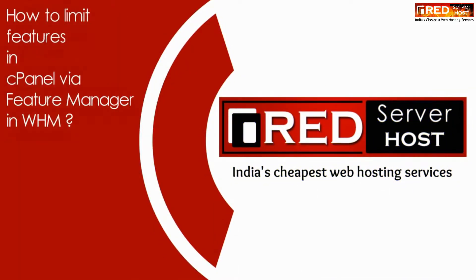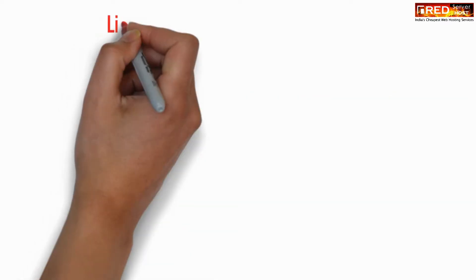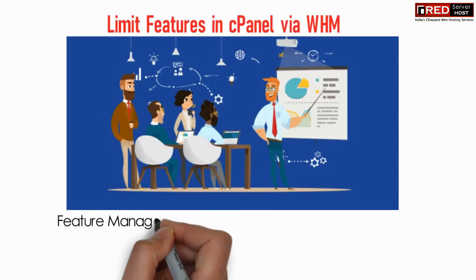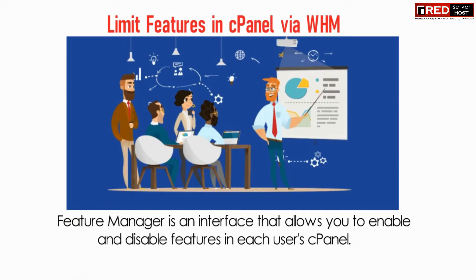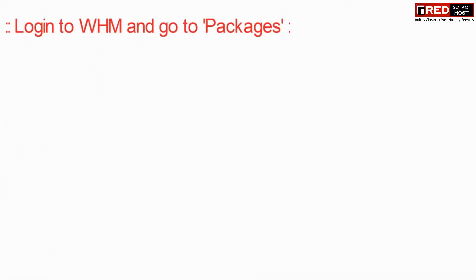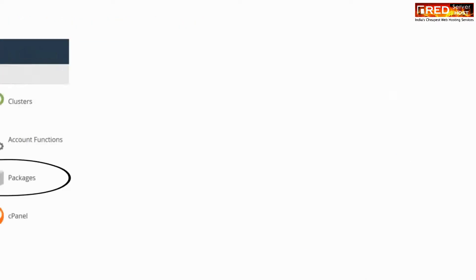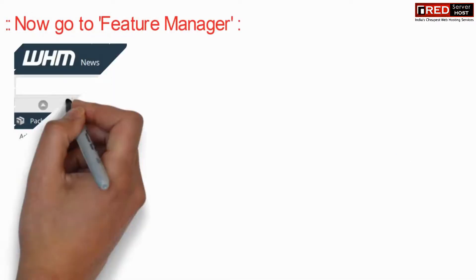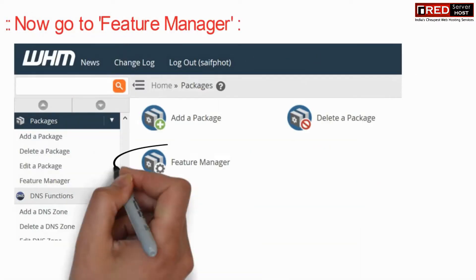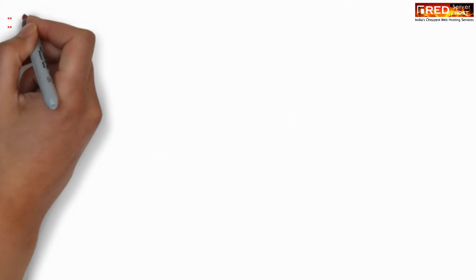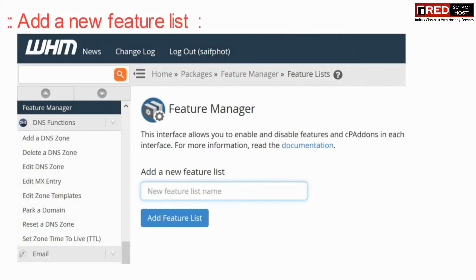Today in this video we will learn about how to limit features in cPanel via Feature Manager in WHM. Login to WHM and then go to Packages, now go to Feature Manager. Now you can add a new feature list.